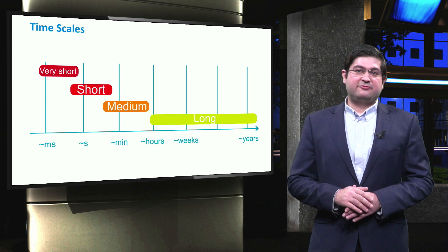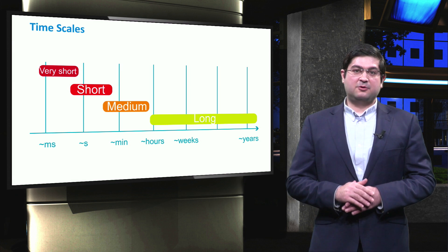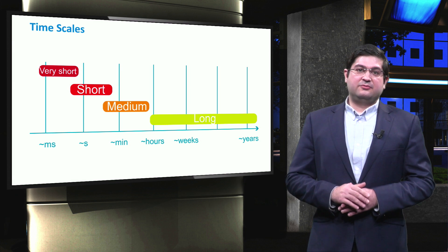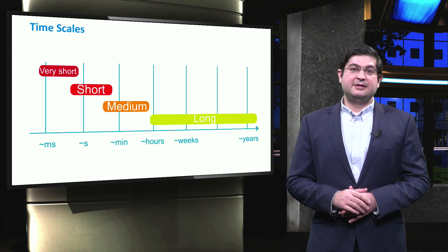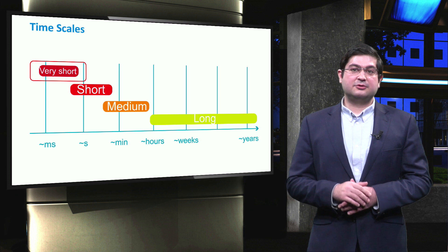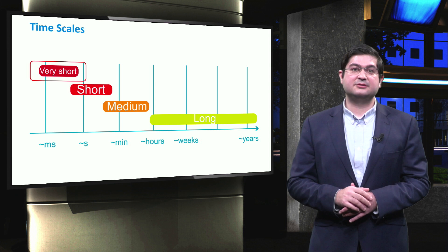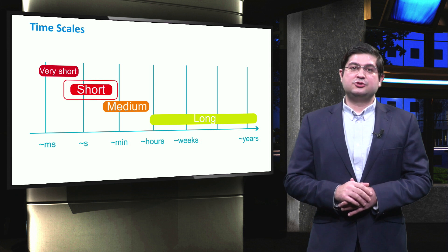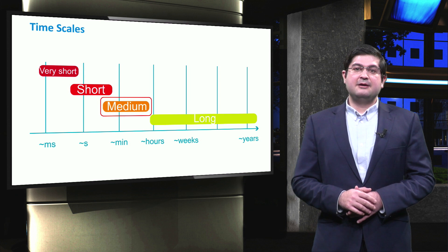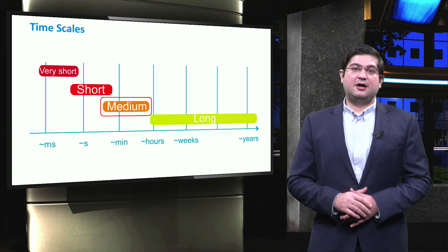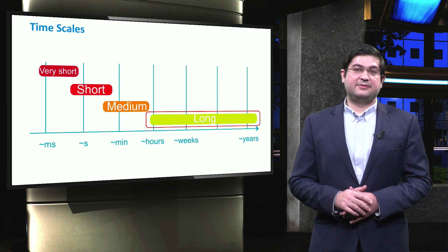Another determinant factor is the time scale for which the service is provided. In this video, we classify ancillary services for a wide range of time scales: very short term from four milliseconds to a few hundreds of milliseconds, short term from one second up to several minutes, medium term from several minutes up to one hour, and long term from hours to several years.